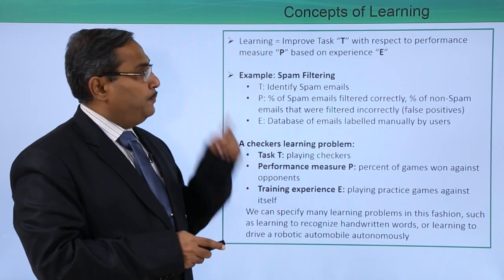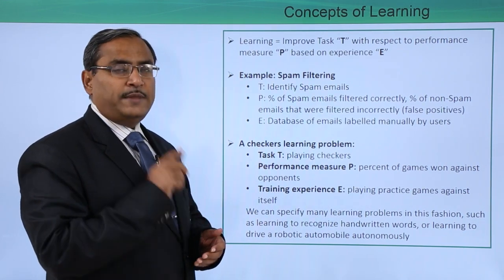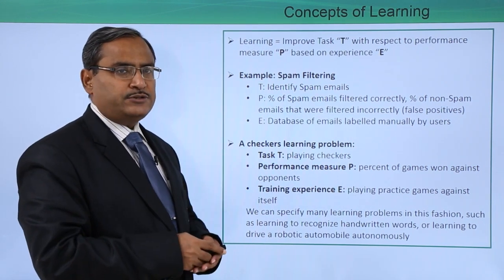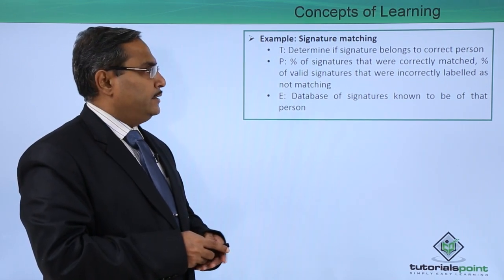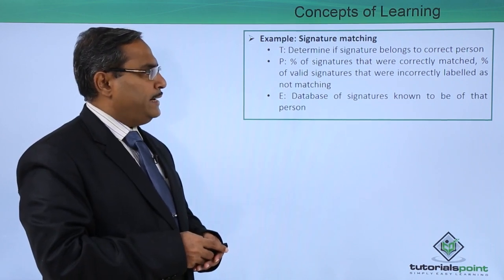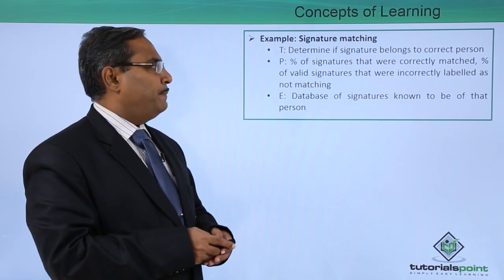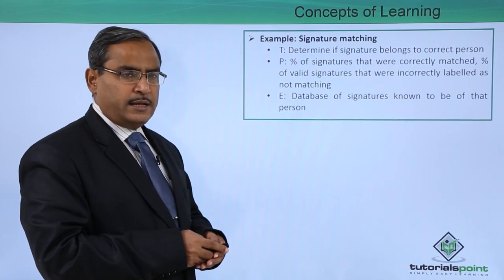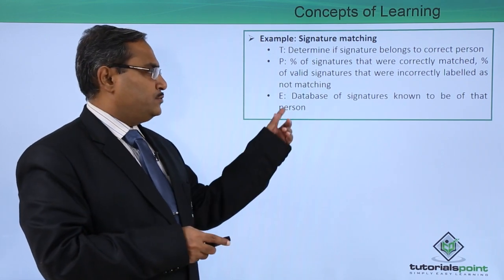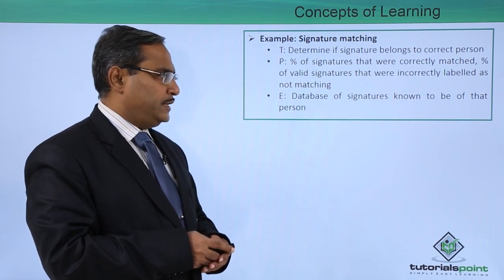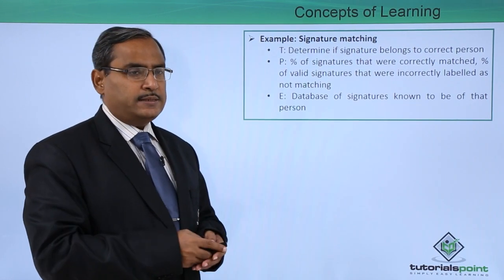Remember: learning is equal to improve task T with respect to performance measure P and based on experience E. Another example is signature matching: T is to determine if a signature belongs to the correct person; P is the percentage of signatures correctly matched and percentage of valid signatures incorrectly labeled as not matching; and E is a database of signatures known to be of that person.